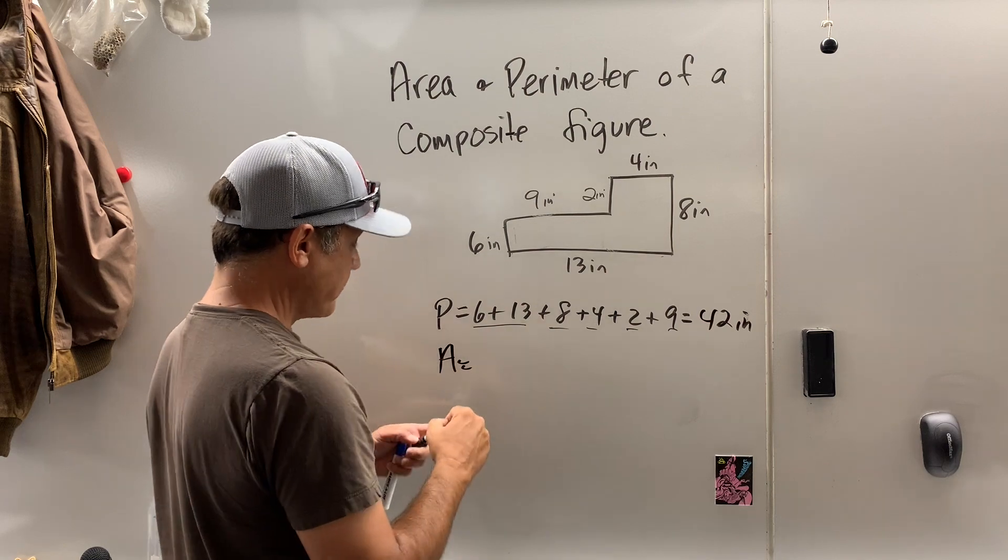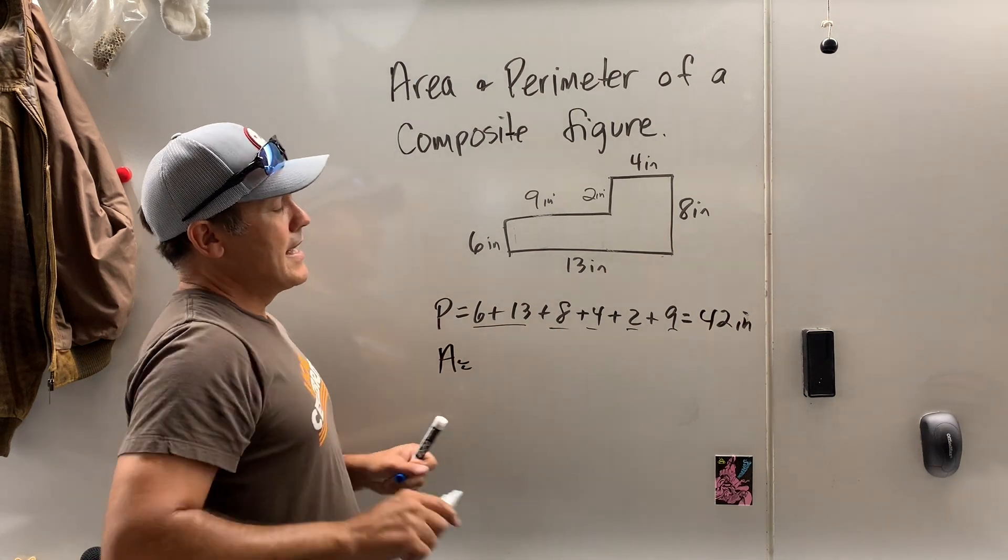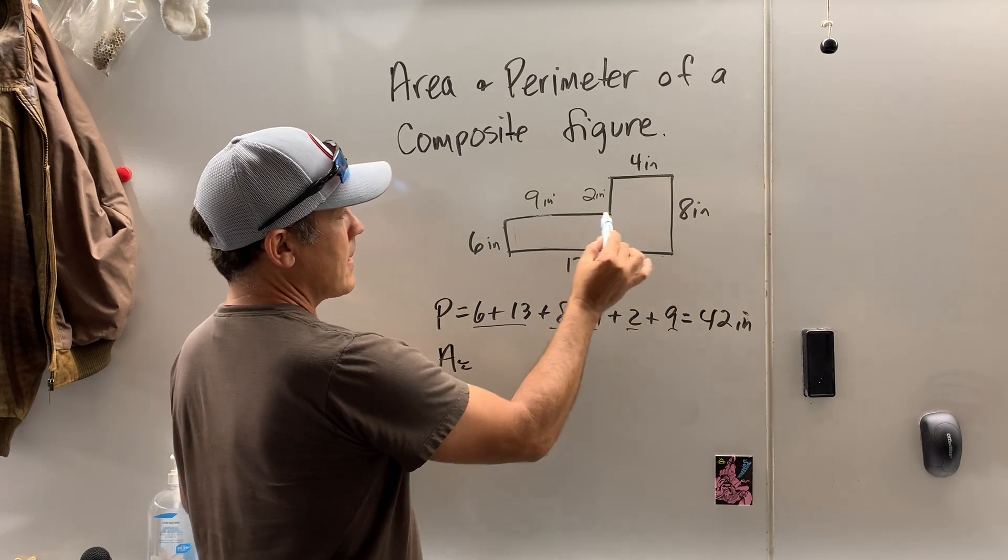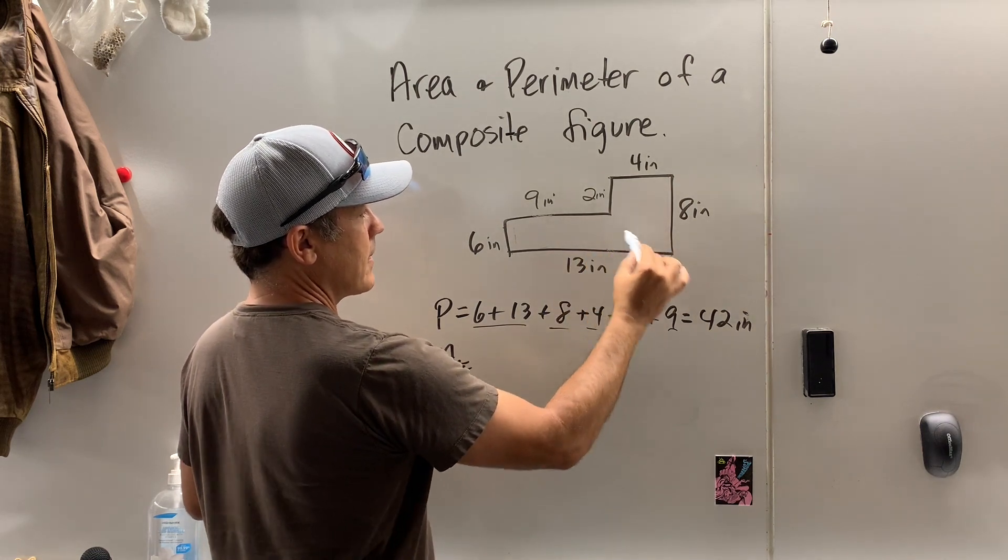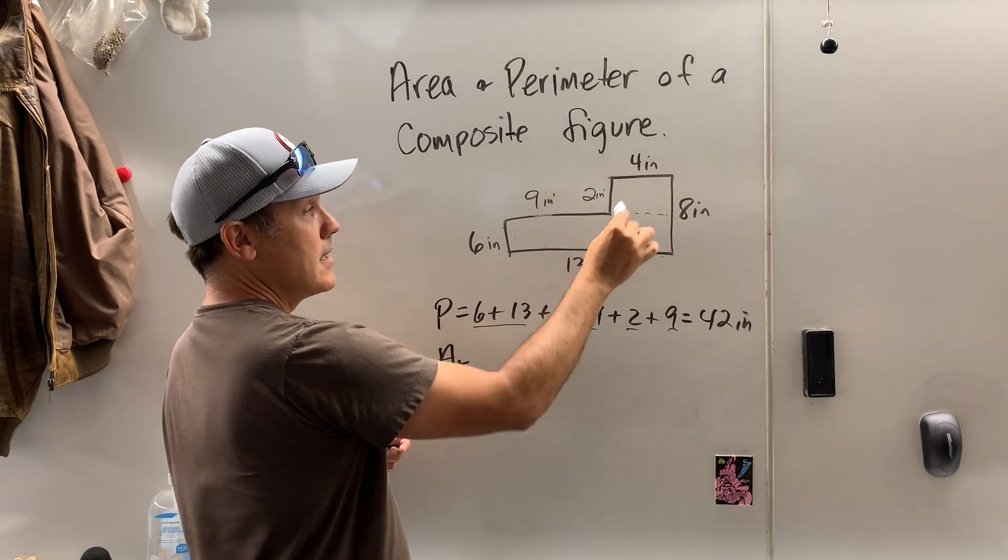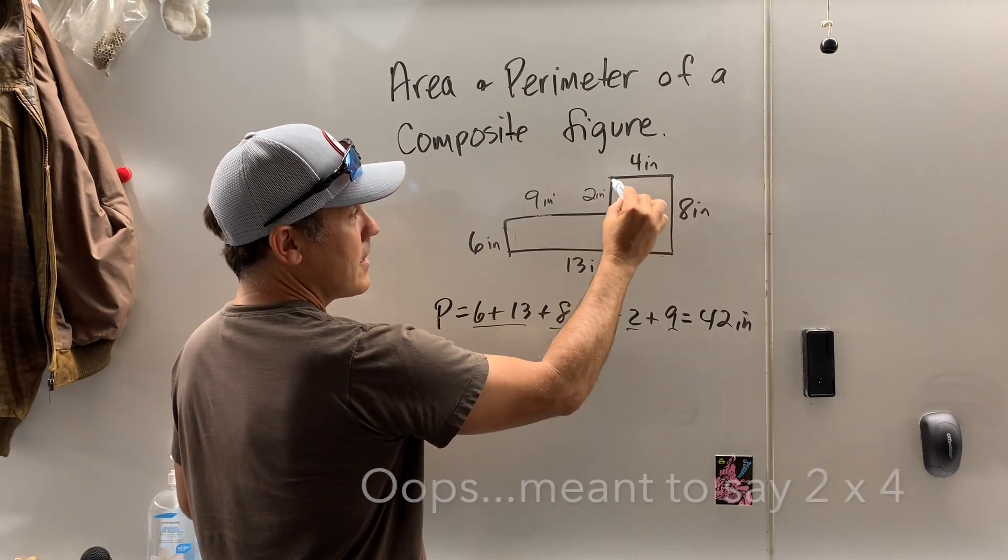The area. Maybe I'll use a different color. Okay. You could break this up into shapes that you know. So I know rectangles, so I could maybe do a dotted line and find the area of this rectangle. So maybe I'll do that. I could have also done this dotted line.